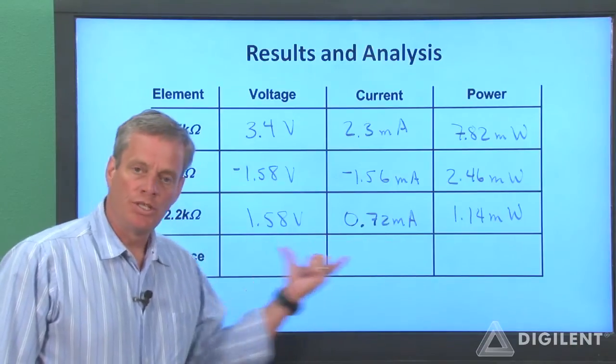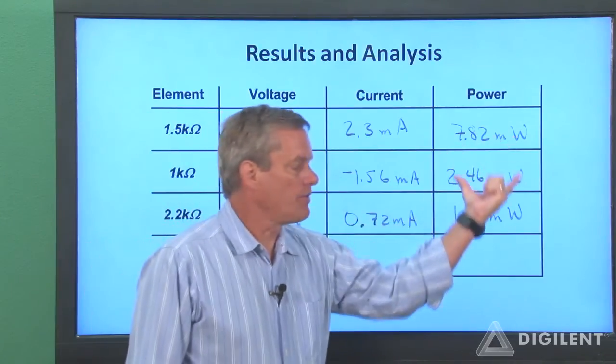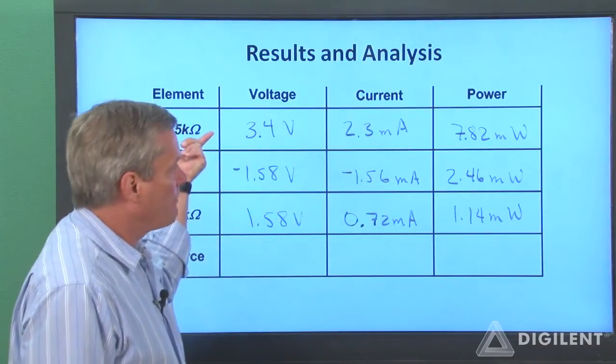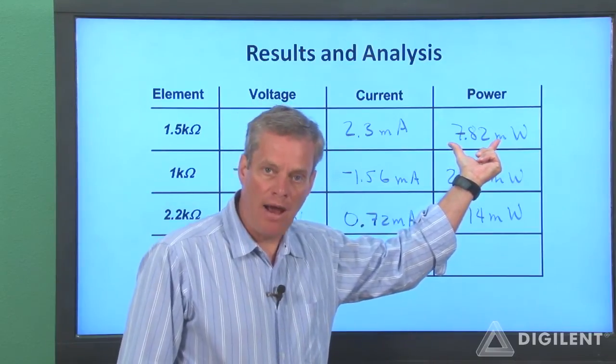These two columns are the voltages and the currents for the three resistors. To get the power for each resistor, we simply multiply the voltage and the current numbers. So for the 1.5 kiloohm resistor, we have 7.82 milliwatts of power dissipated.